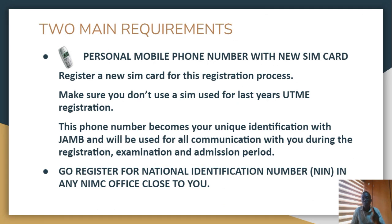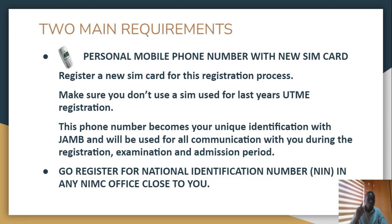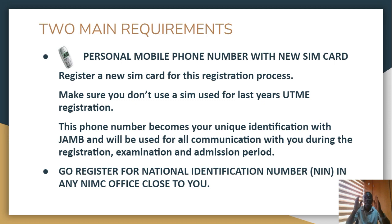The next thing you need to do is to get these two important requirements in order to start the registration process. First, you need a personal mobile number with a new SIM card. Go to the nearest telephone mobile outlet center and register a new SIM. Please don't use a SIM that a candidate used for last year's registration — you'll have serious issues with it. The phone number is used as a unique identification, and JAMB will use it to communicate with you all through registration, your examination period, and your admission period. So it must be a new number.